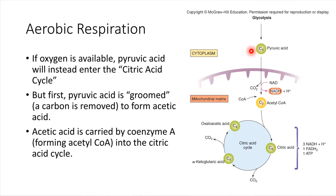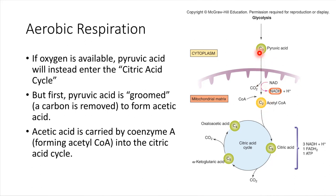Lots of NADH molecules will be available, and the very first step going into aerobic respiration is that this pyruvic acid molecule, which has three carbons, gets what we call 'groomed.' It gets groomed, which just means that one of its carbons gets removed. So there's a carbon that's going to be taken off of this molecule, and consequently we end up with something that has only two carbons — that's what these little subscripts are representing. We went from having three carbons in the molecule to two carbons in the molecule.